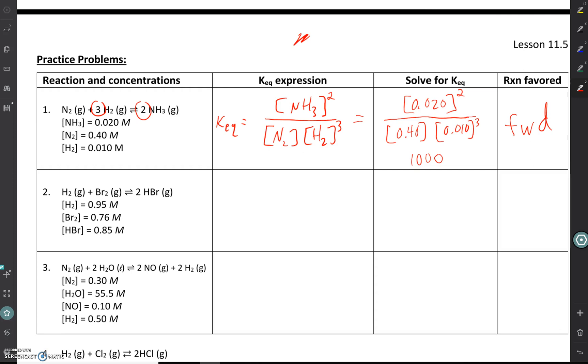We know to take the KEQ and compare it to 1. 1,000 is much greater than 1. So that means our numerator is bigger than our denominator. Our products are at a greater concentration than our reactants. So the forward reaction must have been favored at equilibrium. And that's it. Try out questions 2 and 3. Make sure you can do it. And be careful. Don't turn it on autopilot. Pay attention to phases. Don't let me catch you.